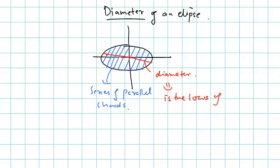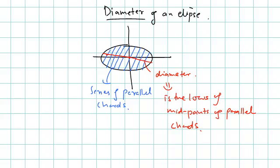We can say the diameter is the locus of midpoints — it is the trajectory formed by joining the midpoints of parallel chords drawn with the same slope, or a series of parallel chords. If you join their midpoints you get a diameter of an ellipse. So the diameter is the locus of midpoints of a series of parallel chords.